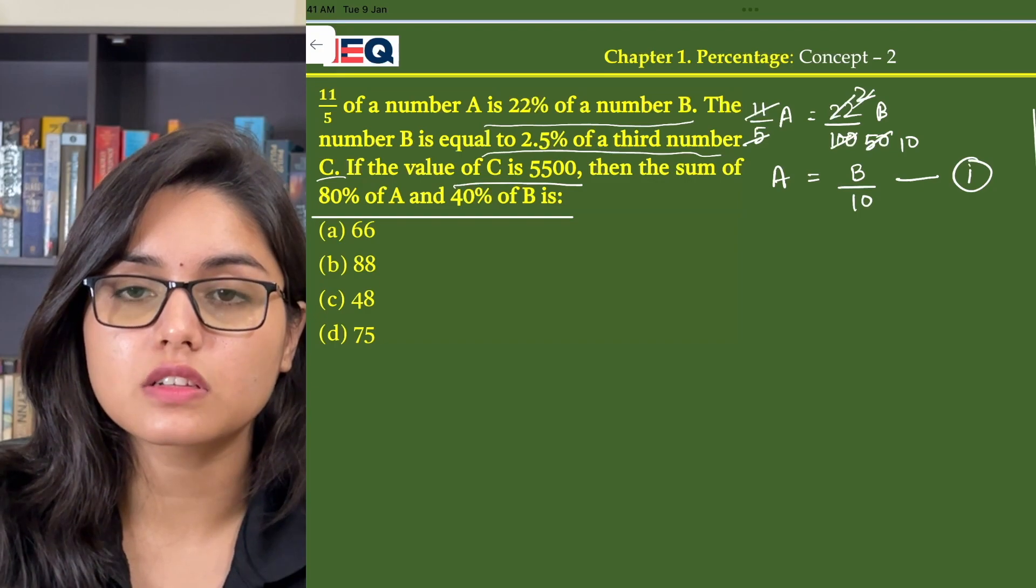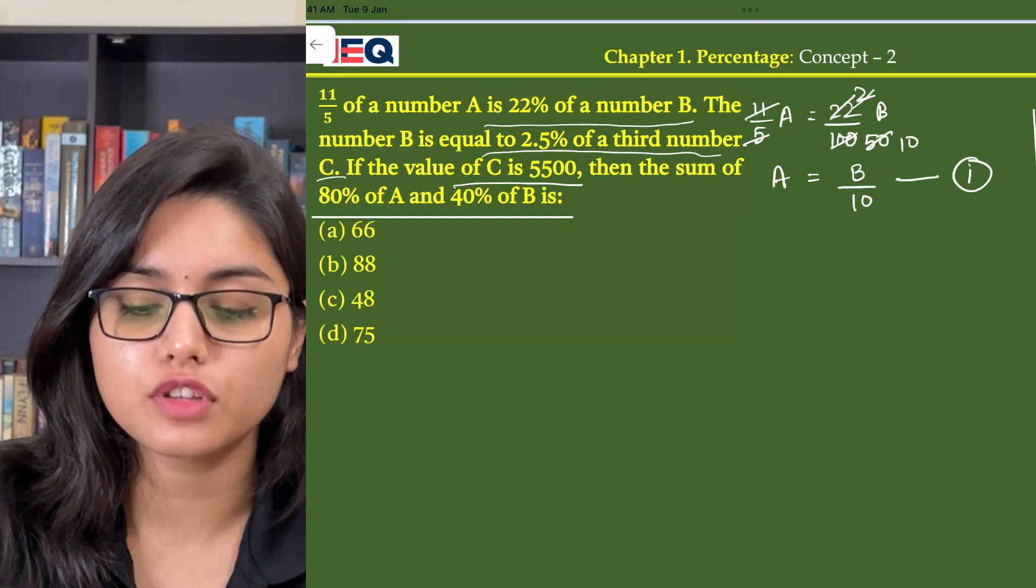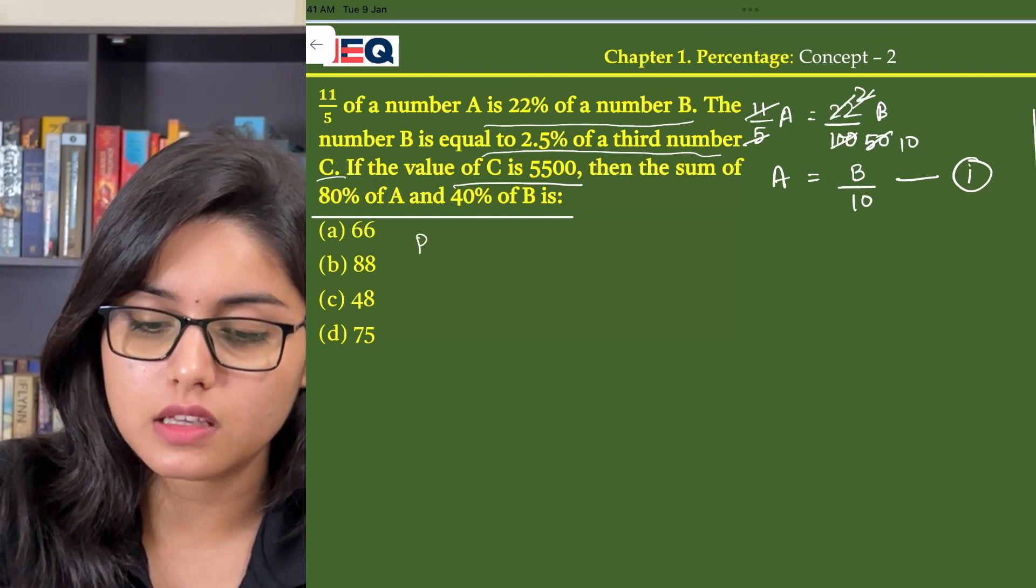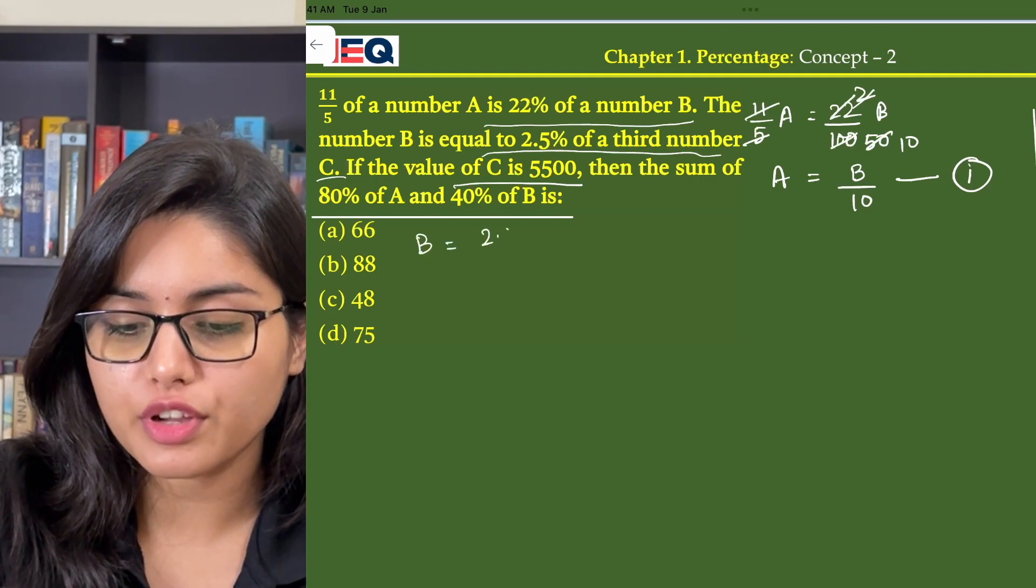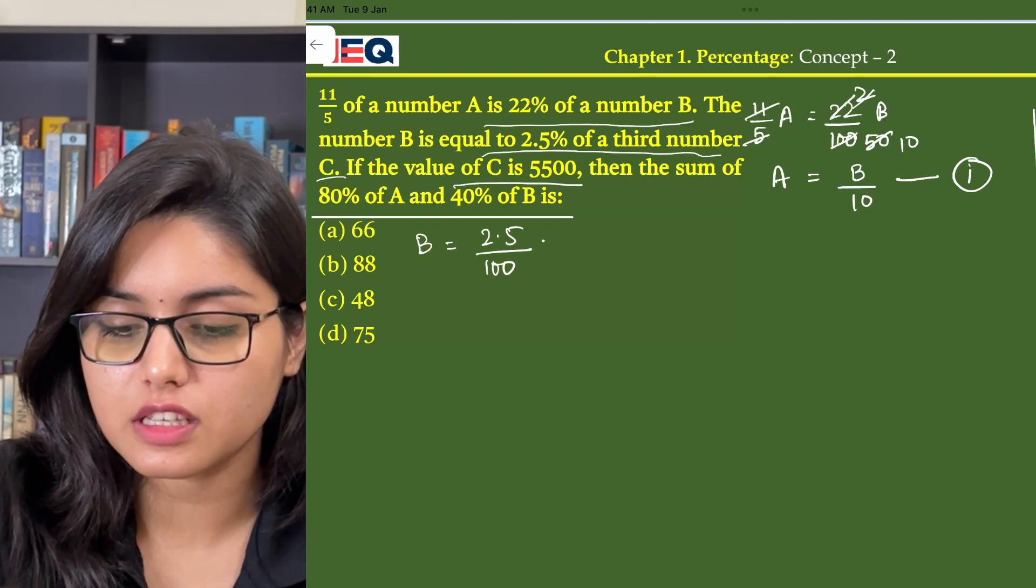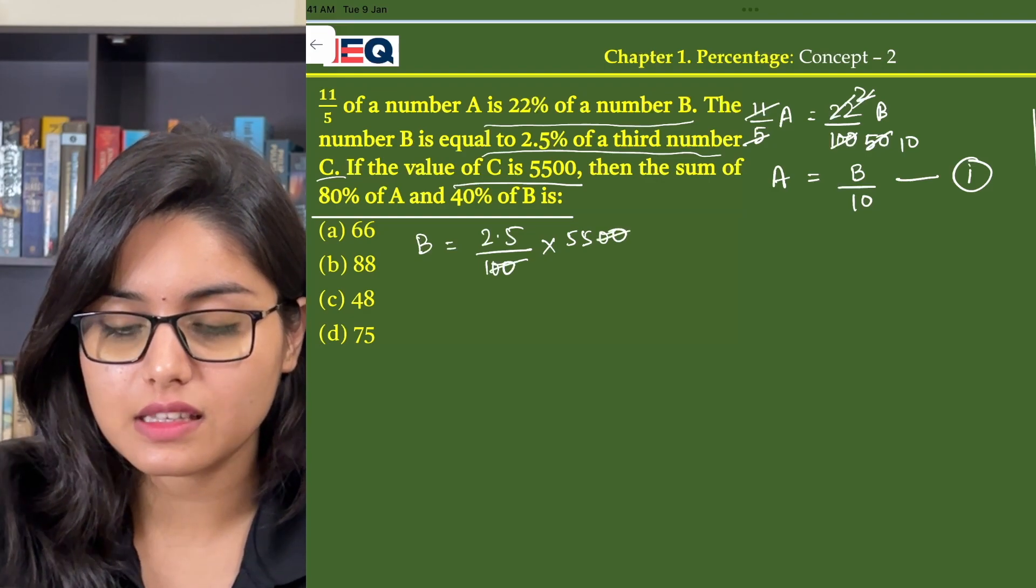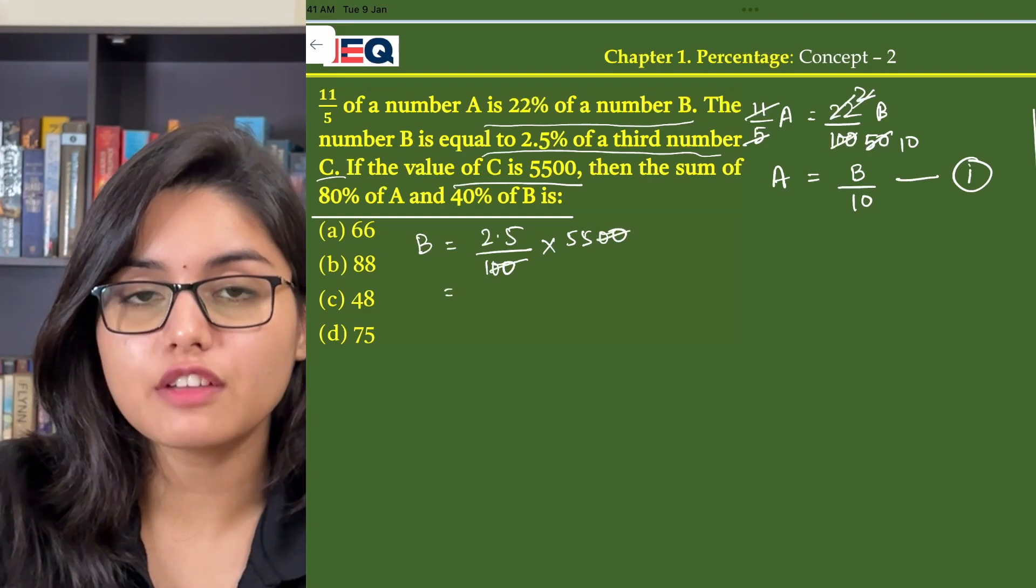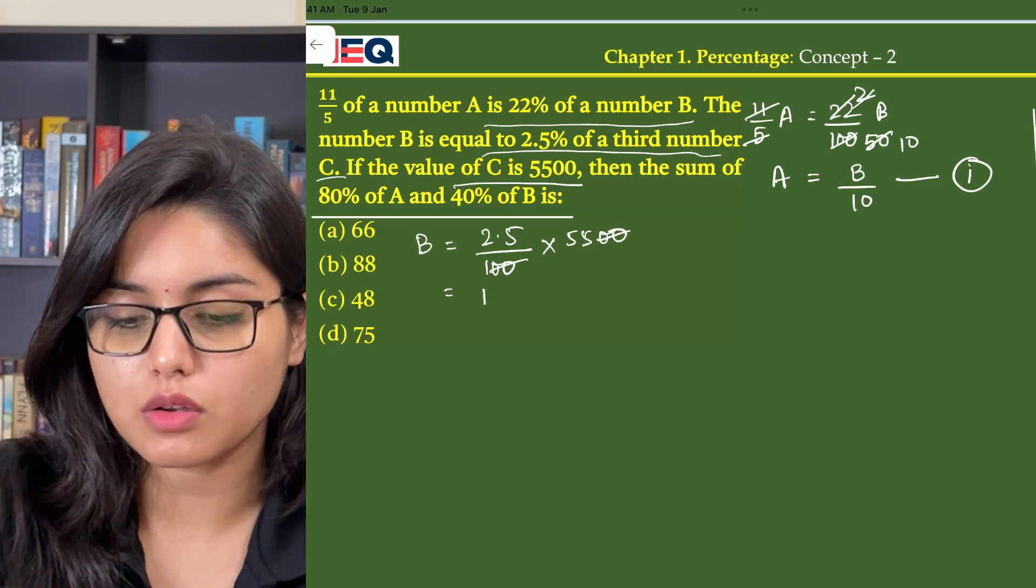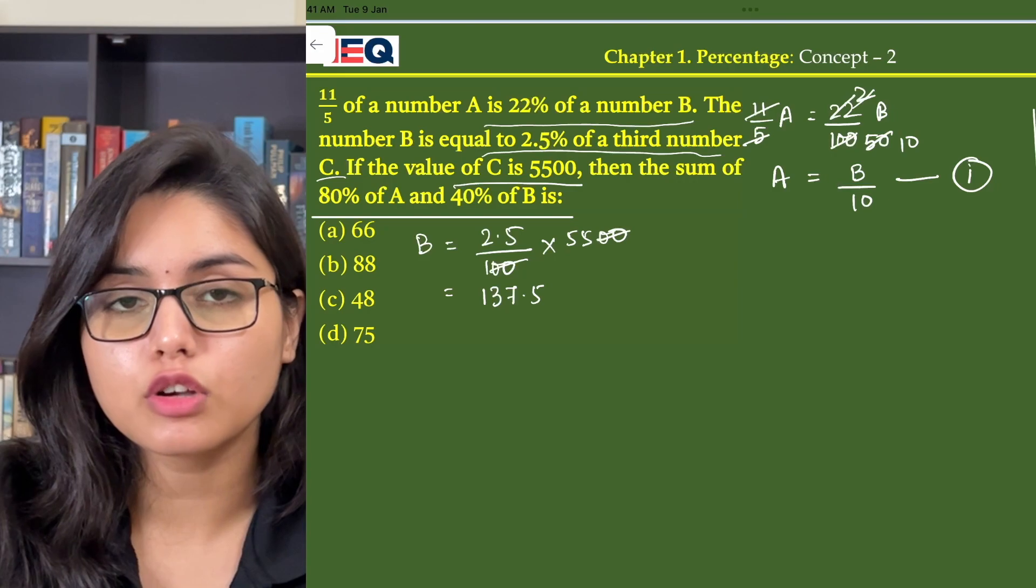Now next in the question, it is told that B is 2.5% of the third number. So B is equal to 2.5 by 100 of C. Now the value of C is given as 5500. 0 gets cancelled. Now 55 into 2.5 gives us 137.5. From here we got the value of B.